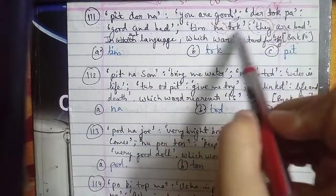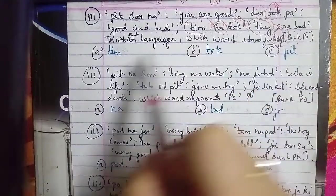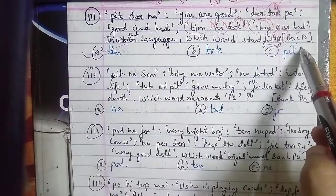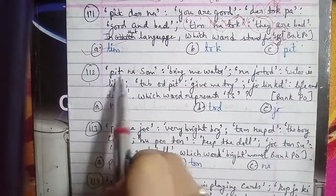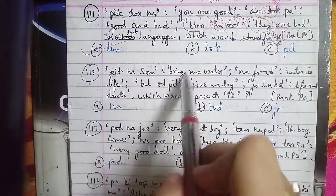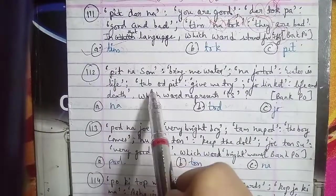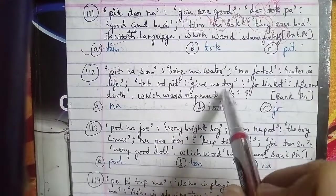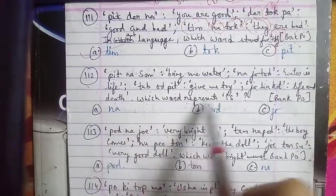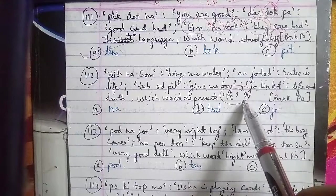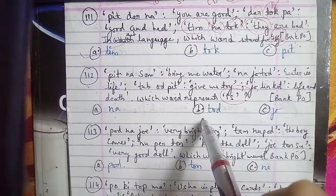Moving on to question 112. Pit na som is coded as 'bring me water', na jo tod is coded as 'water is life', top od pit is coded as 'give me toy', and jo link cot is coded as 'life and death'. Which word represents 'is'? This was asked in a bank exam. The options are A: na, B: tod, and C: jo.